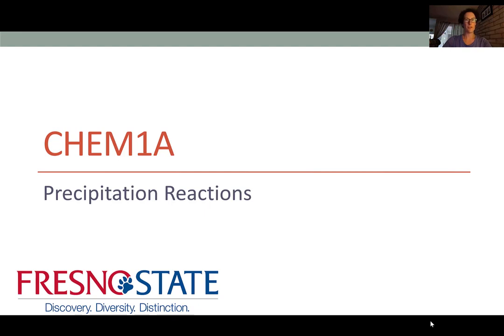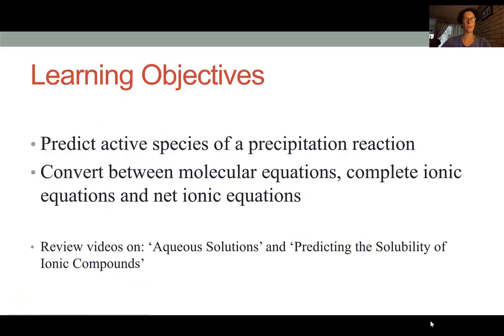Hi. This lecture video deals with one type of chemical reaction that we call a precipitation reaction. In this lesson, you will learn how to predict the active species of a precipitation reaction, and how to describe these types of reactions by converting between a molecular equation, a complete ionic equation, and a net ionic equation.